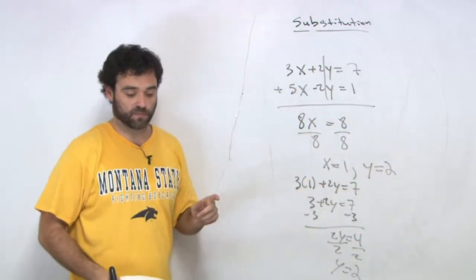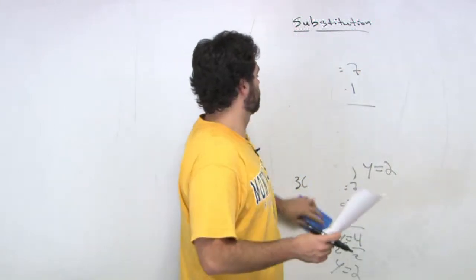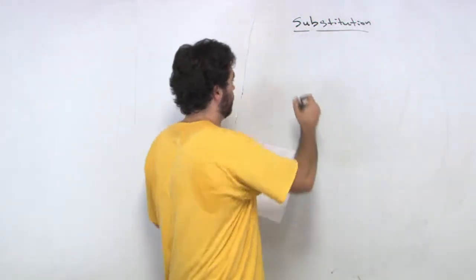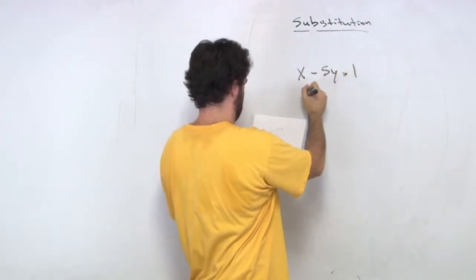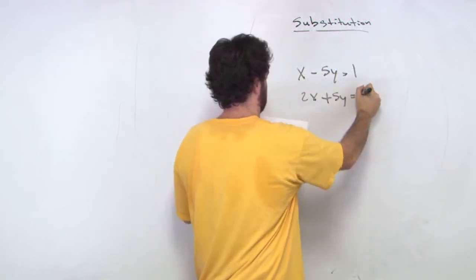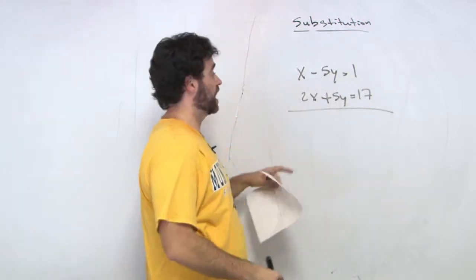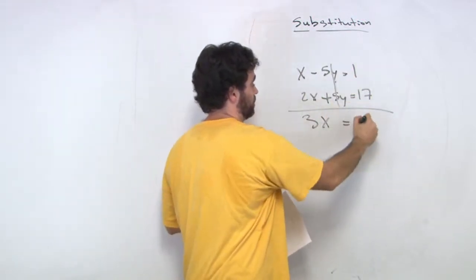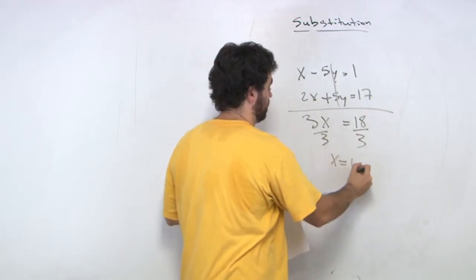That's what we call the addition method, okay? I'll do one more of these. These are not so bad. And we have x minus 5y equals 1, and 2x plus 5y equals 17. Again, opposite signs. We just add top to bottom. We get 3x. These cancels, equals 18. Divide by 3, x equals 6.